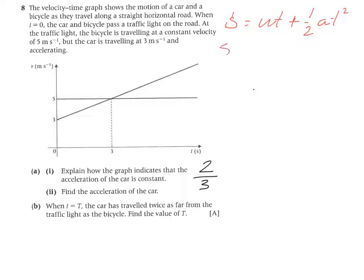So first of all the displacement then for the bike. So SB is going to be UT. Well, his initial speed or velocity is 5. So 5T plus a half times its acceleration which is 0 times T squared. So 0 times a half times T squared is 0. So the displacement of the bike is given by the expression 5T.